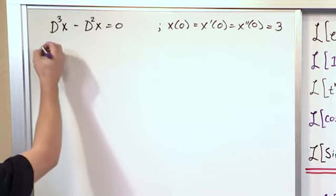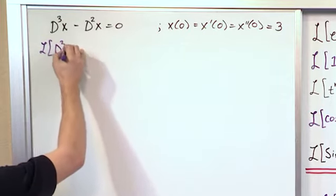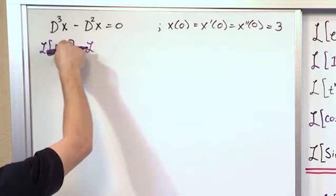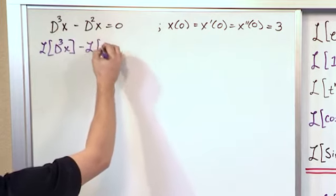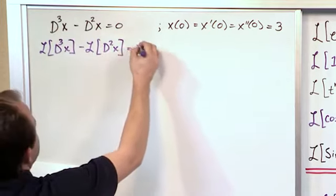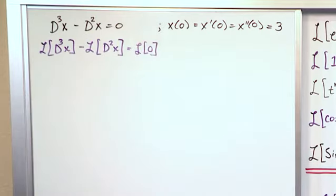So we apply the same thing. We're going to take the Laplace Transform of everything and we're going to do it separately. So we'll have the Laplace Transform, this should be a three actually, of the third derivative and then the Laplace Transform of the second derivative. And on the right hand side, we'll go ahead and take the Laplace Transform of zero. So we're just applying that Laplace Transform to each and everything.